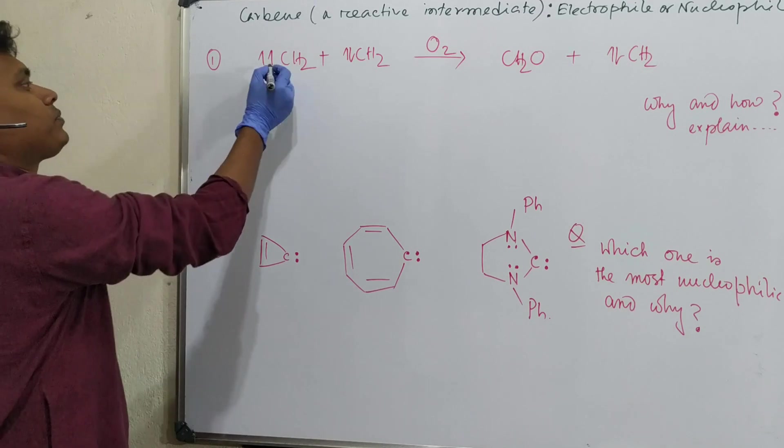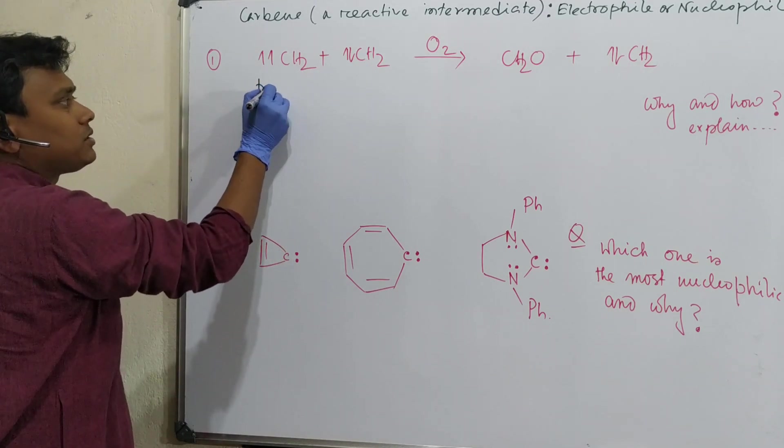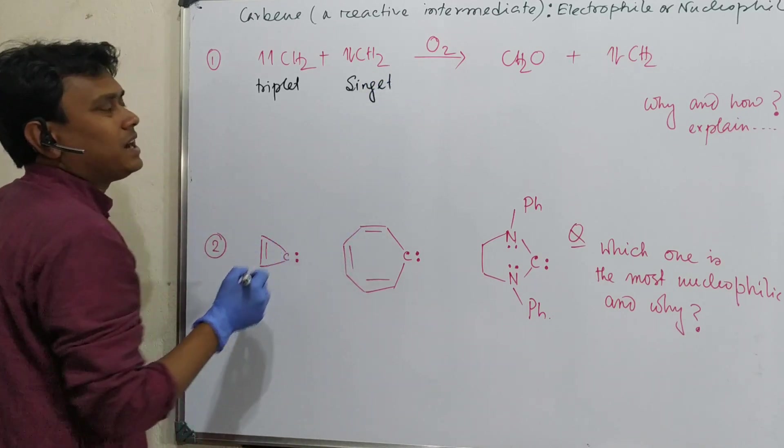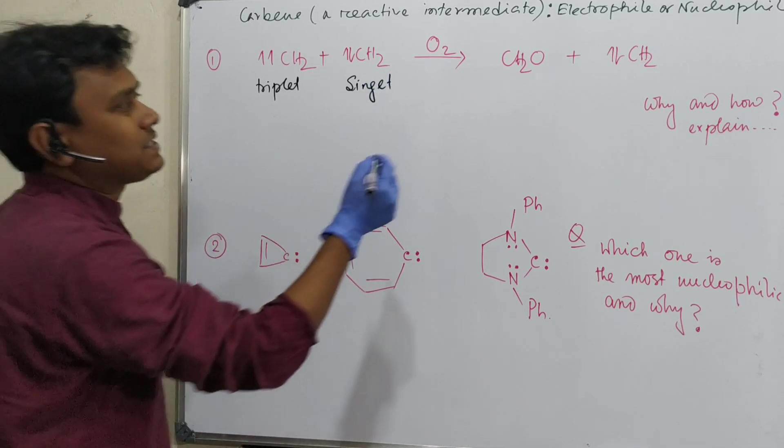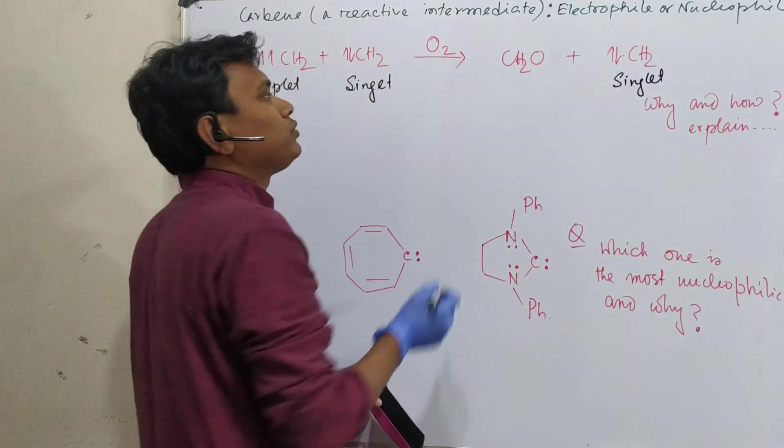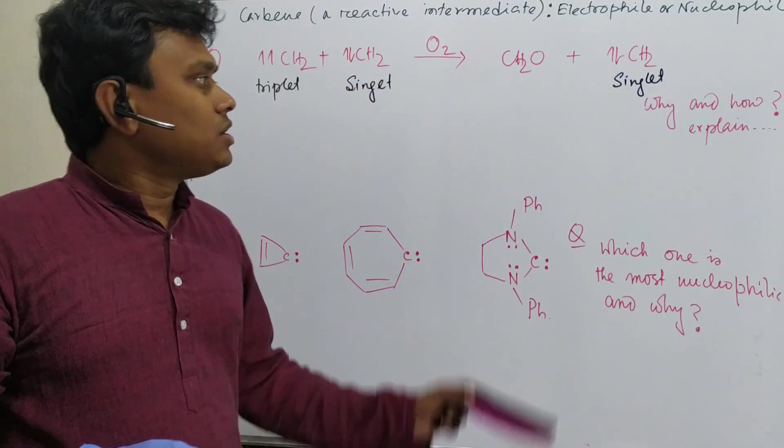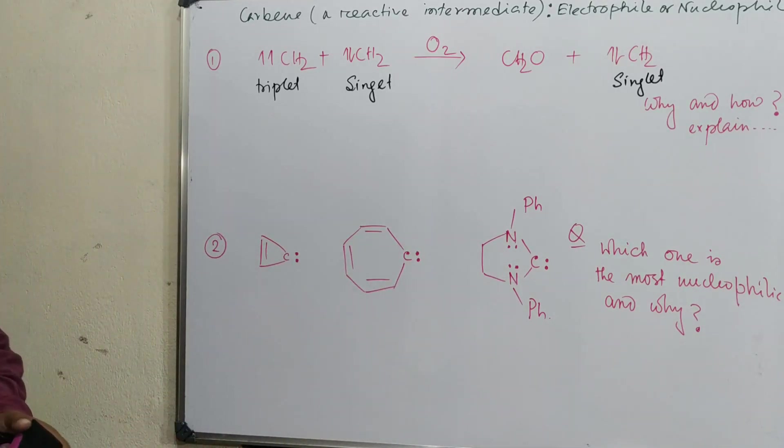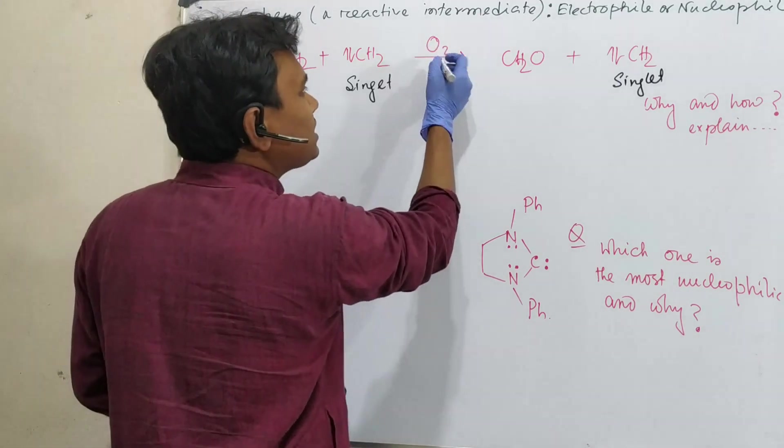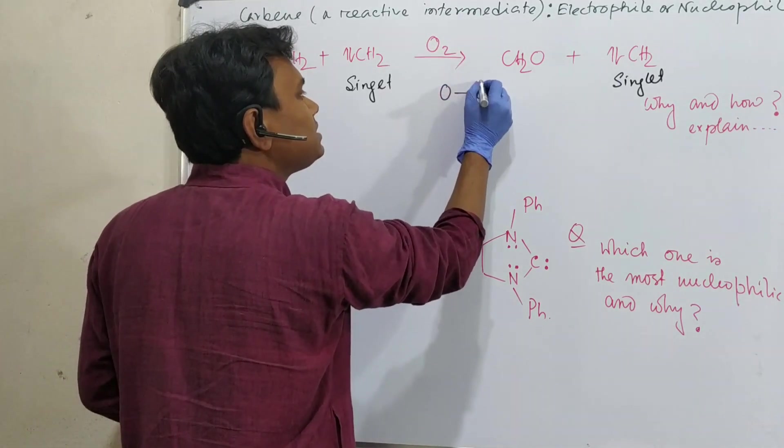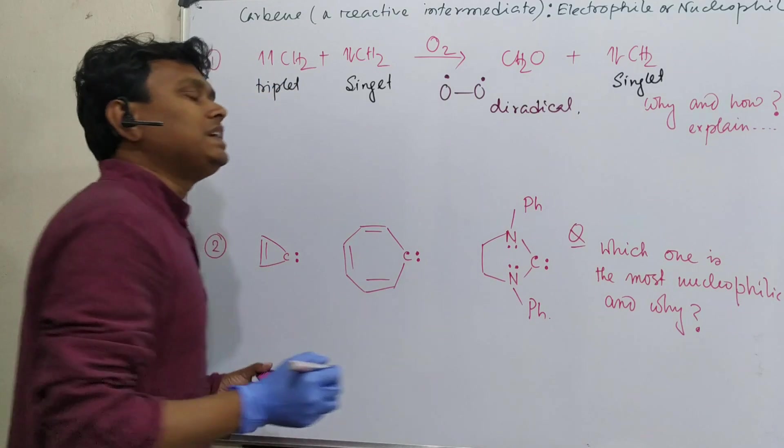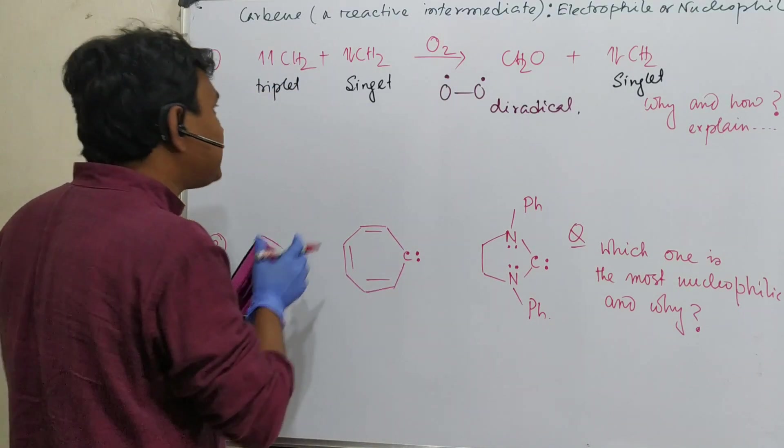First question: this is CH2 triplet and this is singlet. Let us understand the question first. In presence of oxygen, what happens? Singlet remains intact, all the triplet react and produce formaldehyde. Question: how? Why and how? If we have to discuss the problem, oxygen is actually a diradical. Oxygen remains in triradical form.